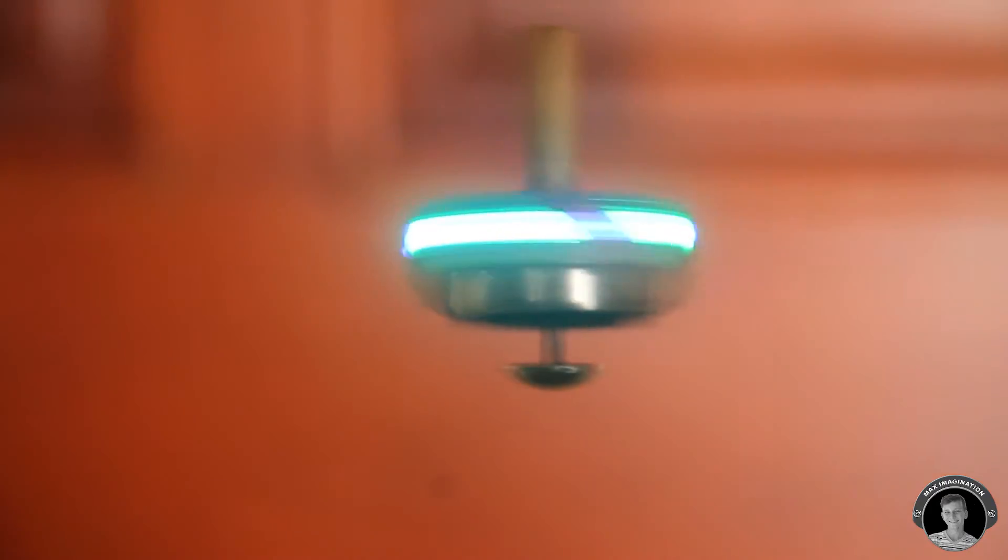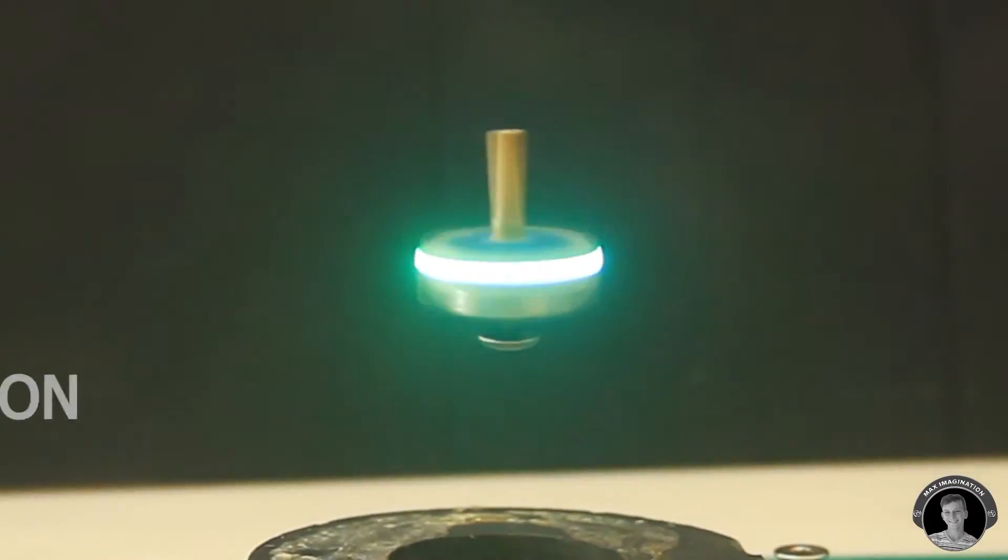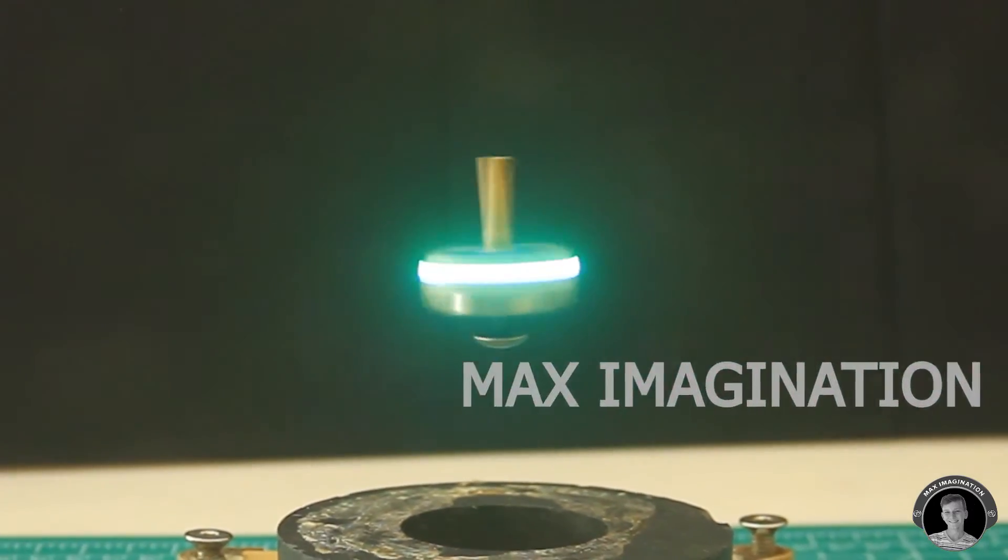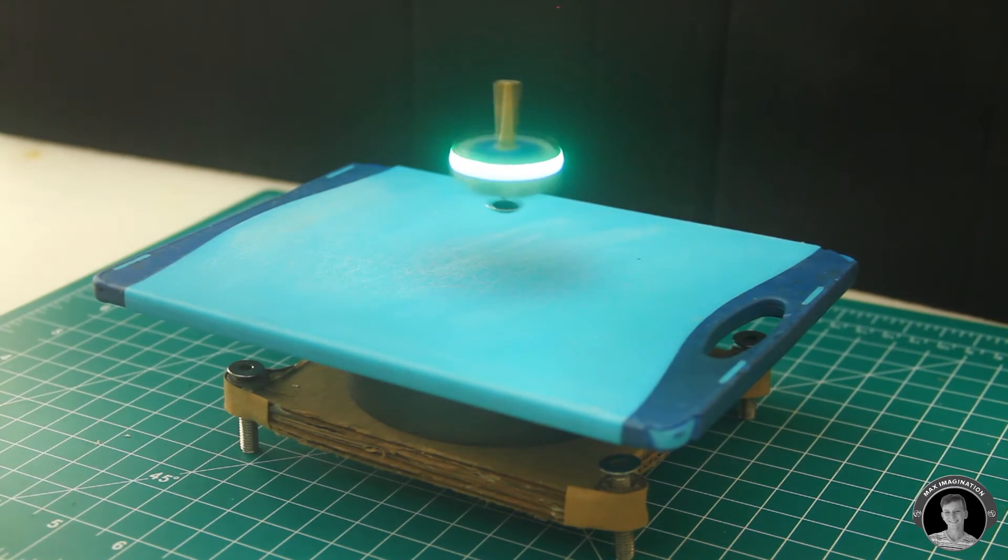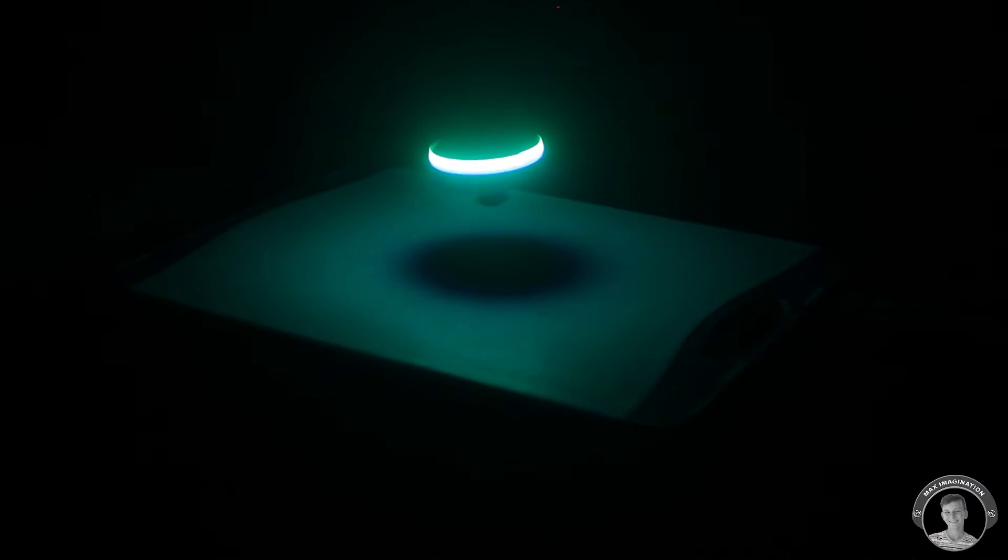This provides an upwards force on the spinning top due to the magnetic field from the base magnet. This means that the upward force acting on the levitating spinning top needs to be equal and opposite to the opposing force of gravity pulling down on the top.